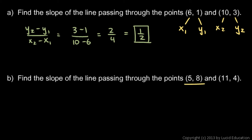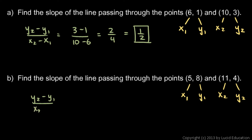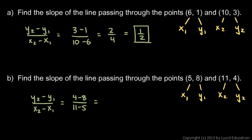Find the slope of the line passing through 5,8 and 11,4. We'll call the first point point 1, so x1 is 5 and y1 is 8. And x2 is 11 and y2 is 4. So we put those numbers in: y2 minus y1 over x2 minus x1 is 4 minus 8 over 11 minus 5. That gives us negative 4 over 6, which reduces to negative 2 thirds. This slope is negative, which means if we were to graph the line it would be falling — it goes down 2 and over 3, a slope of negative 2 thirds.